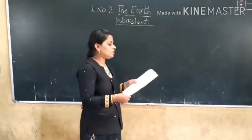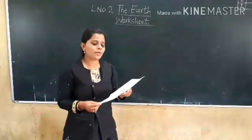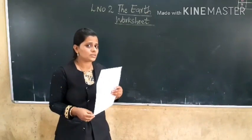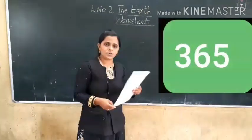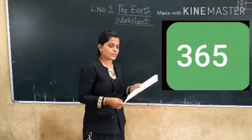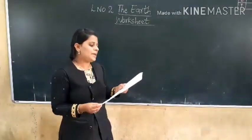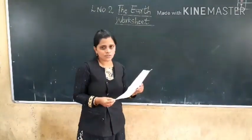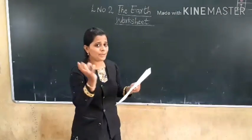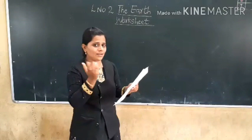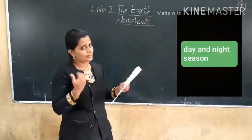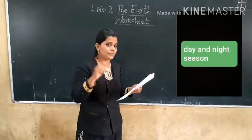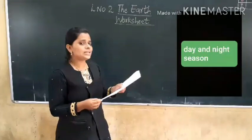The third one: Earth takes blank days to complete one revolution around the Sun. The correct answer is 365 days. Fourth one: Spinning causes blank in blank, and revolution causes change in blank. When the Earth spins it causes day and night. Revolution causes seasons. Write day and night, and then season.